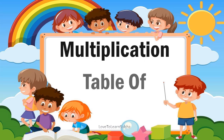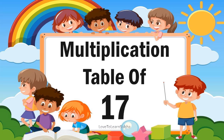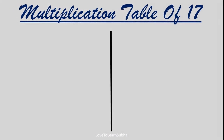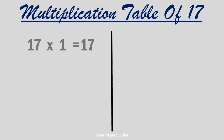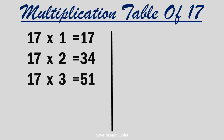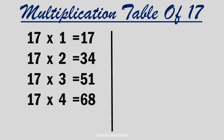Multiplication table of 17. 17 1s are 17, 17 2s are 34, 17 3s are 51, 17 4s are 68, 17 5s are 85.